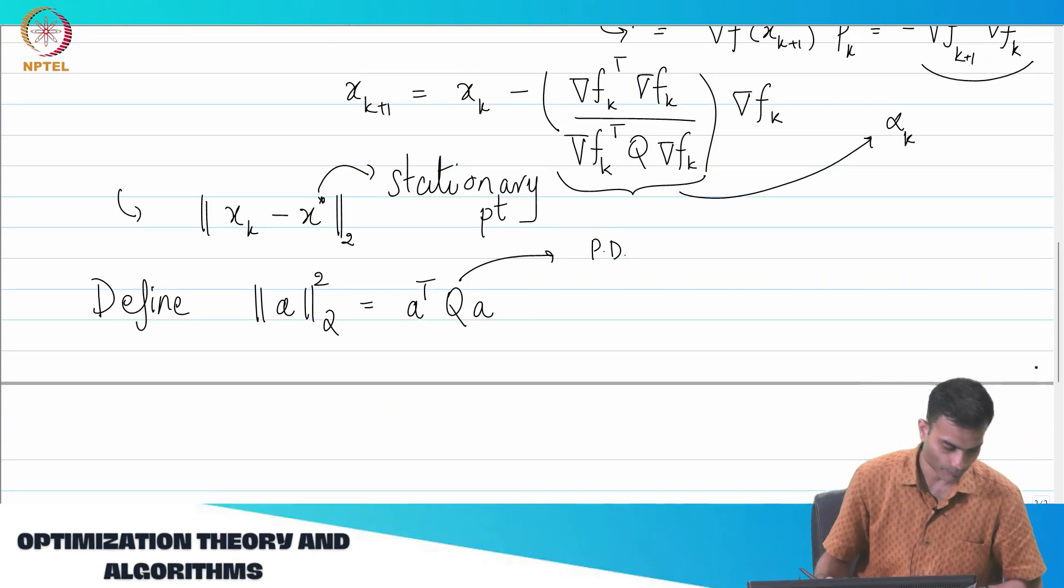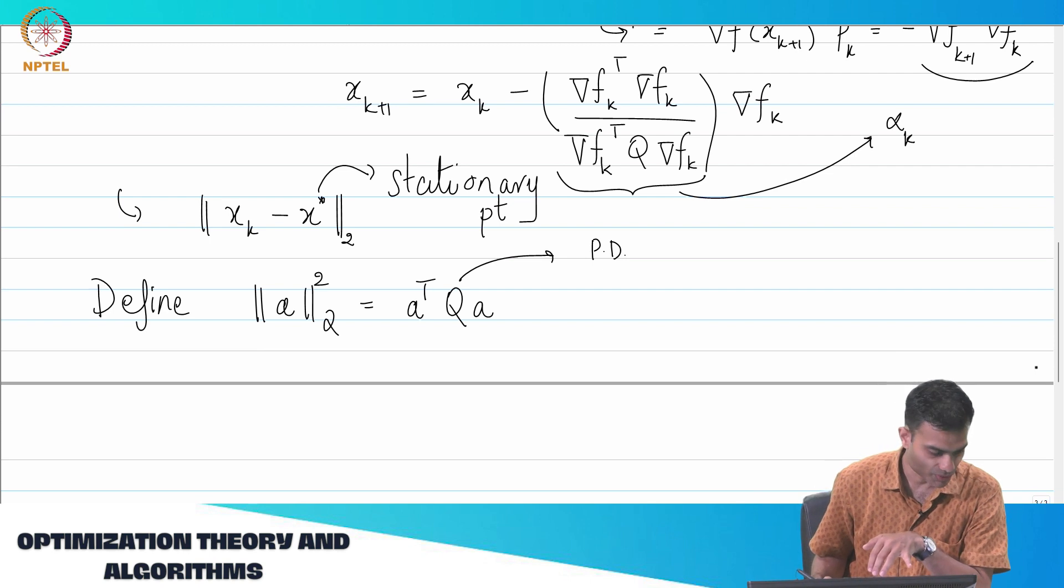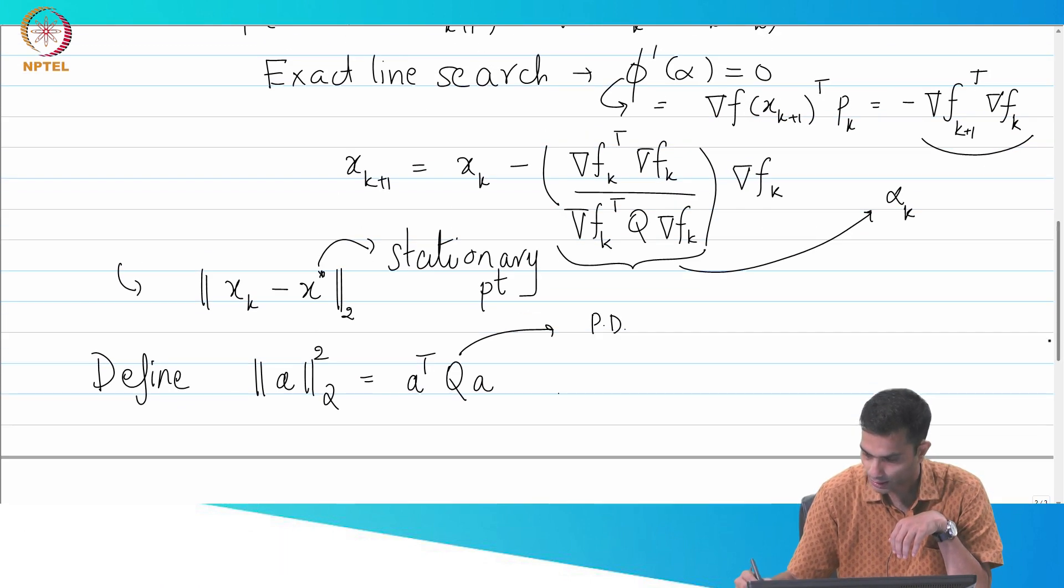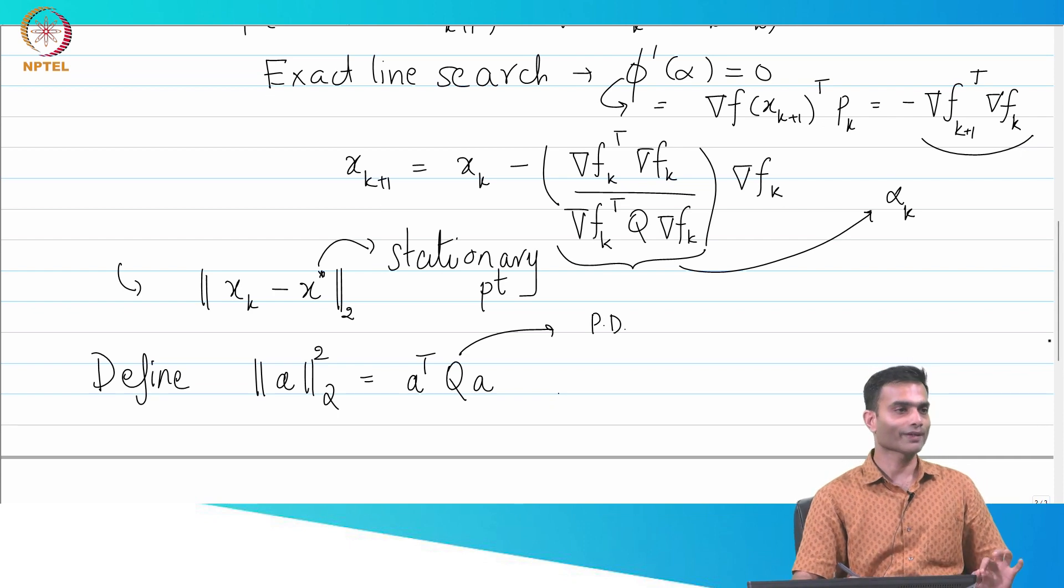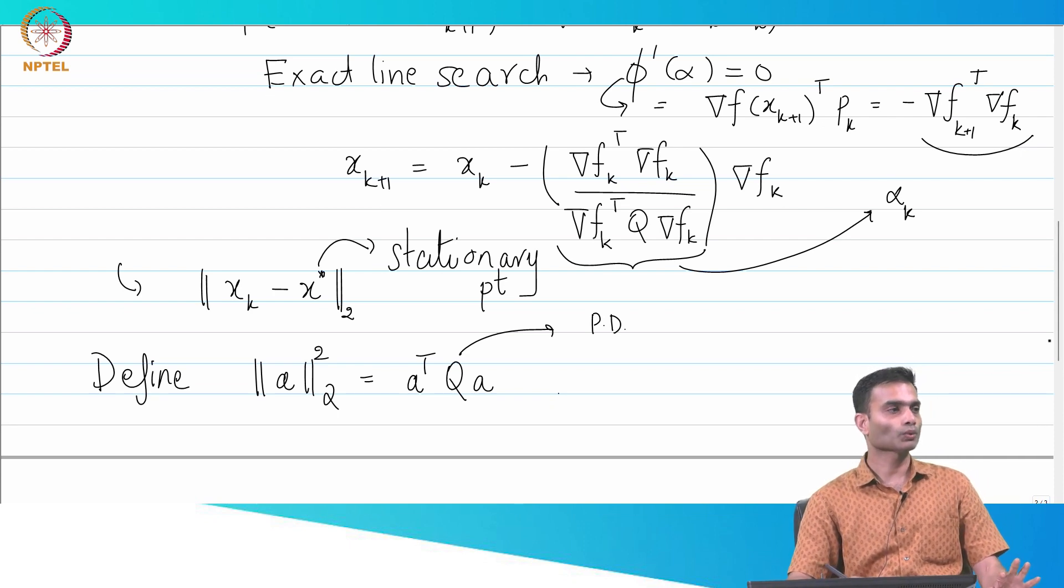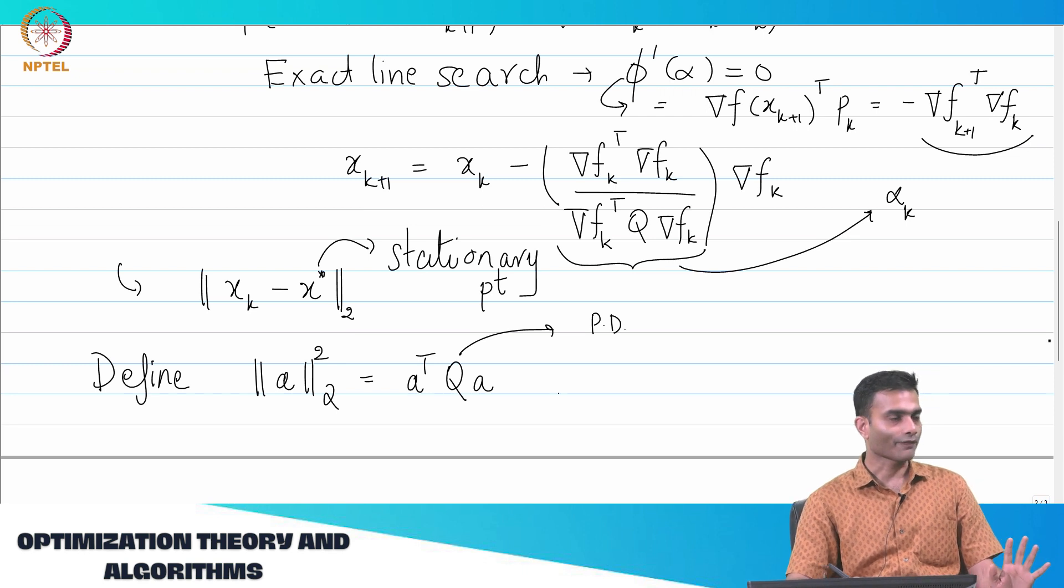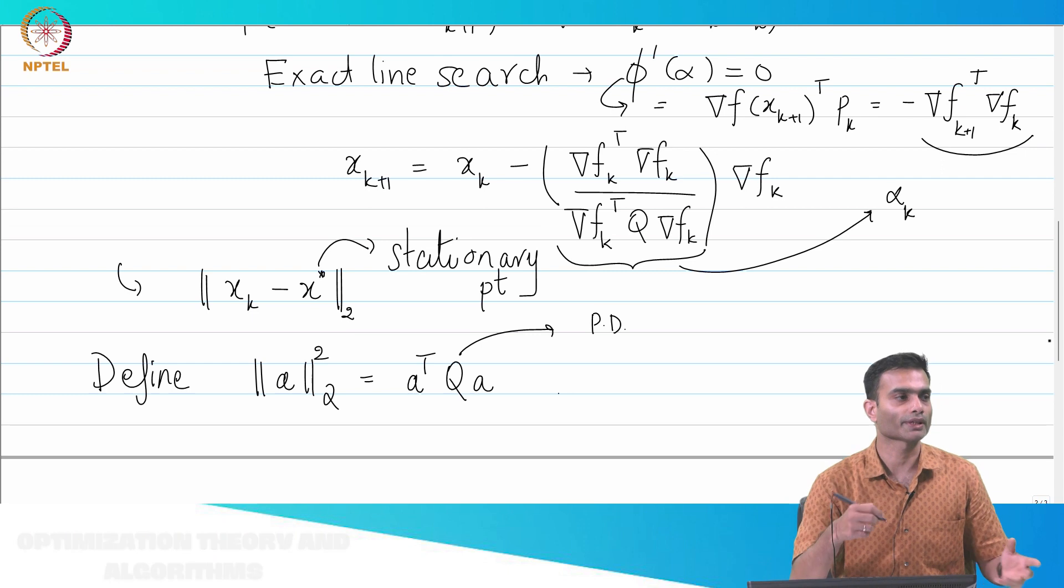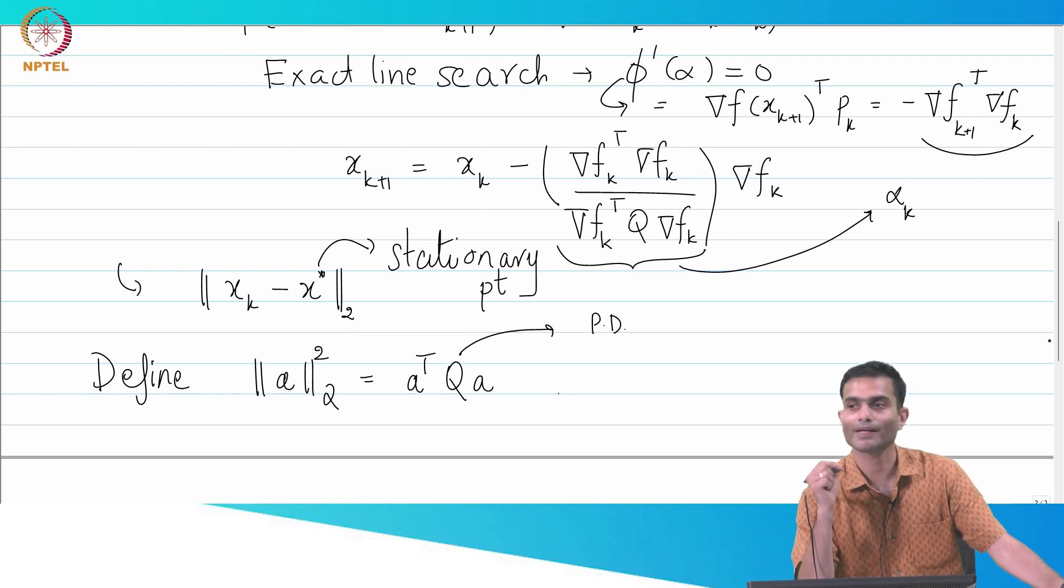All right, so I'm going to use this norm in the rest of the analysis. Now, we should know where we are heading - we are heading towards a stationary point. If I'm heading towards a stationary point, what is one of the qualities of the stationary point? How will I identify it?